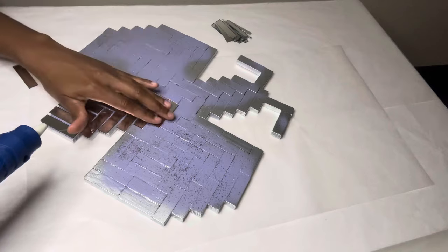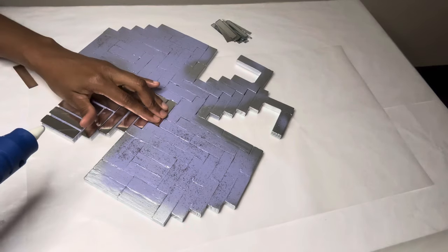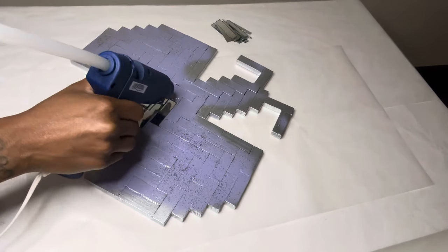I found it better to add the hot glue directly to the wood block since it dries out faster when applying it to the mirror tiles.